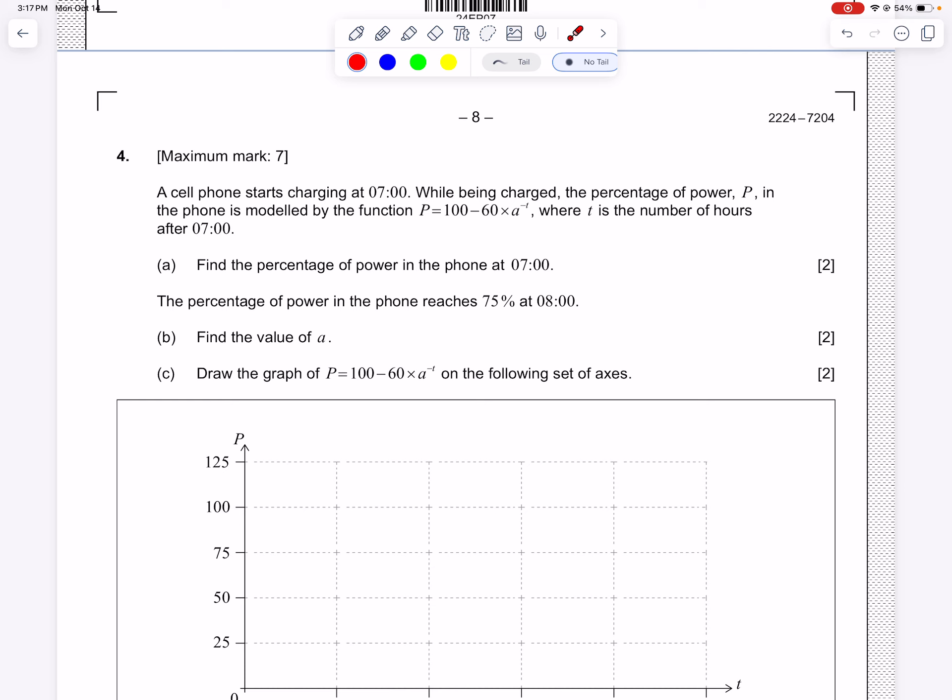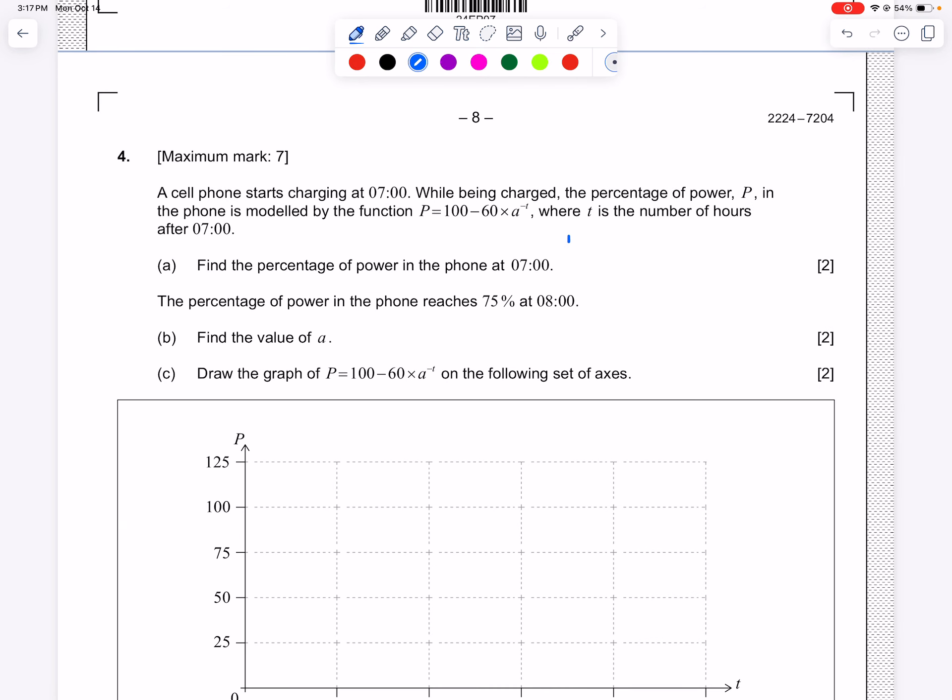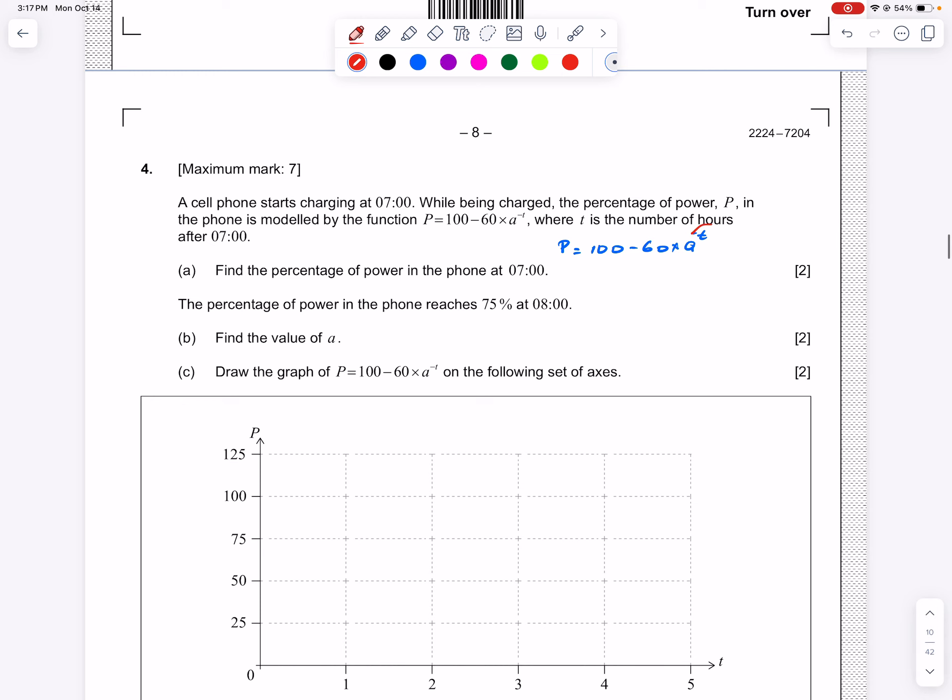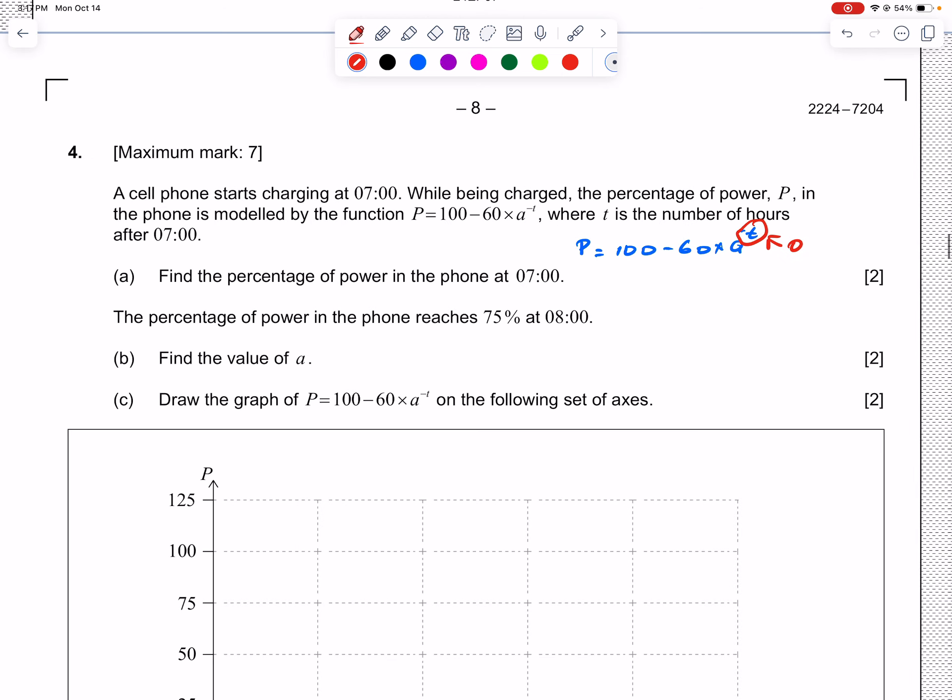First it says to find the percentage of power in the phone at 7 o'clock. At 7 o'clock no time has passed because that is the start, which means time equals zero. We can plug into our function P = 100 - 60 × a^(-t). Because time is zero, we plug in zero here. You may recall that anything raised to the power of zero is just one, so we have power equals 100 - 60 × 1, which is 100 - 60, which gives us 40.